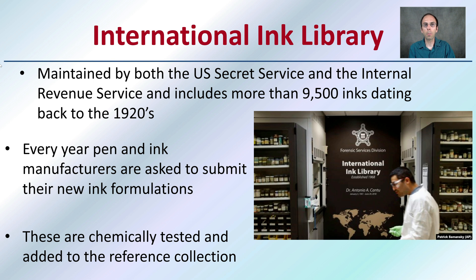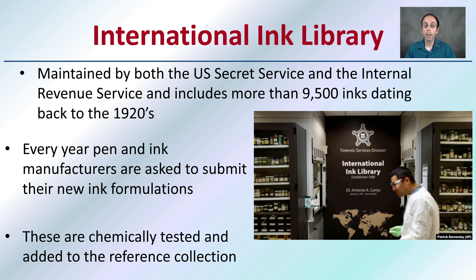Why would we have this high degree of specificity? There's actually an international ink library where inks from different manufacturers are stored. It's maintained by the U.S. Secret Service and the Internal Revenue Service, and includes more than 9,500 inks dating back to the 1920s. Every year, pen and ink manufacturers are asked to submit new ink if they have new formulations. This giant library allows pinpointing what time period a pen came from and how that might impact materials found at a crime scene. These inks are chemically tested and added to the reference collection, creating a great database for comparison when identifying certain inks.